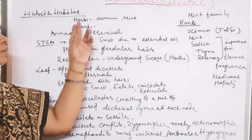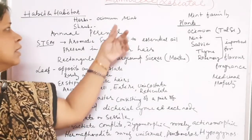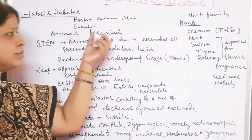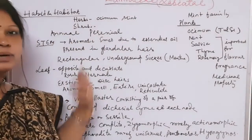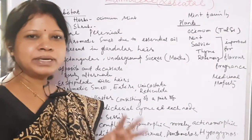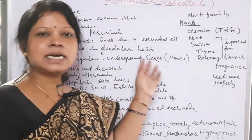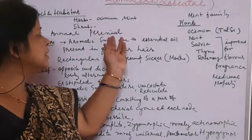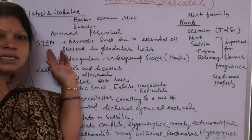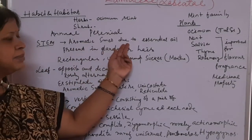Regarding habitat, some plants in this family are herbs and some are shrubs. In the case of Ocimum and mint, they are herbs. Some are annual herbs — plants which live for a single season — and some are perennial, which live for many years together.